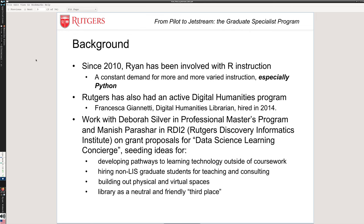That's one driver. A second component is we've had an active digital humanities program at Rutgers since the hiring of Francesca Giannetti, our digital humanities librarian. Going back to 2015 or so, discussions started with faculty at Rutgers — Deborah Silver, who is in charge of the professional master's program, and Manish Parashar, who was in charge of the Rutgers Discovery Informatics Institute. We worked on a grant proposal which wasn't ultimately funded, but a lot of the ideas were fleshed out there.